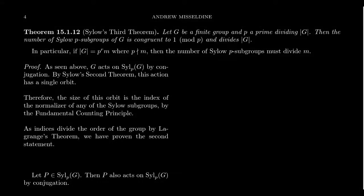In this video, we are going to state and prove Sylow's third theorem about Sylow P-subgroups. If G is a finite group and P is a prime dividing the order of G, by the first Sylow theorem we know that Sylow P-subgroups exist, and by the second Sylow theorem we know that all Sylow P-subgroups are conjugates of each other. In the third theorem, we're going to count how many Sylow P-subgroups a group can have.